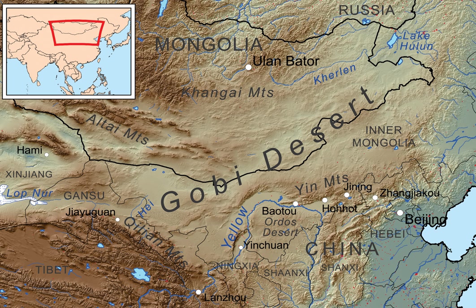The Gobi is a cold desert, with frost and occasionally snow occurring on its dunes. Besides being quite far north, it is also located on a plateau roughly 910 to 1,520 meters above sea level, which contributes to its low temperatures. An average of approximately 194 millimeters of rain falls annually in the Gobi.